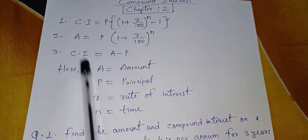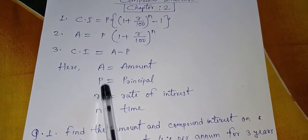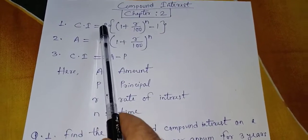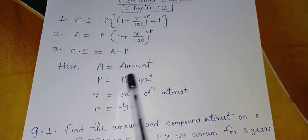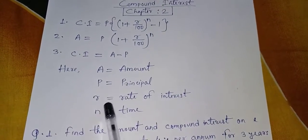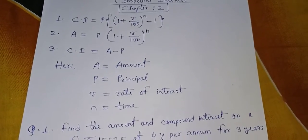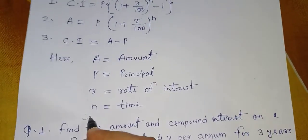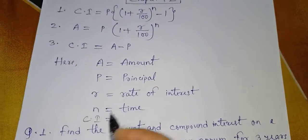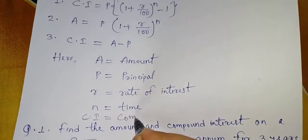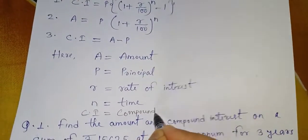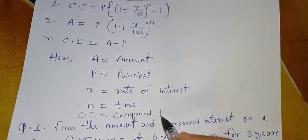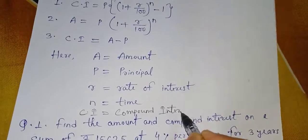So here A means amount. P, you can see the P here in the formula, means principal. R means rate of interest and n is time. Here I can write CI is equal to compound interest. So these are the names of the alphabets I have used.